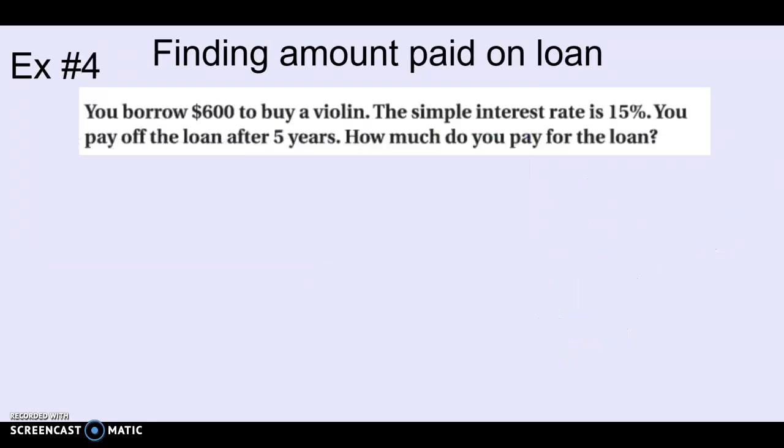Example 4. Finding how much you would pay for a loan. So you borrow $600 to buy a violin. The simple interest rate on your credit card or for that loan is 15%. Looks like that's the rate. You pay off the loan after five years. So you're gaining interest on what you owe for five years. That's your time. So starting with $600, 15% interest rate, five years. How much do you pay for the loan?